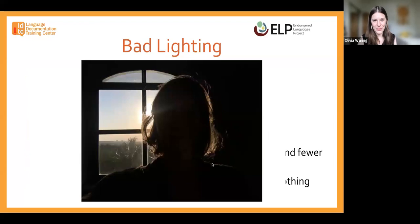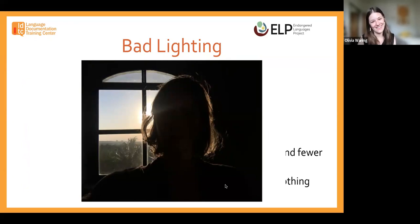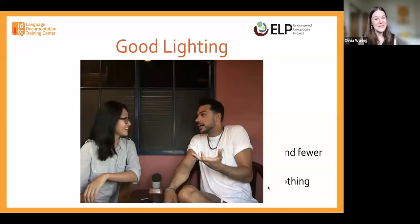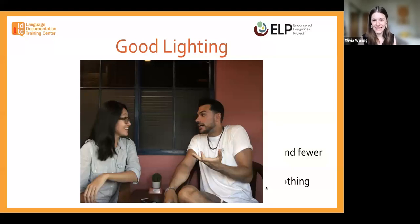Some examples of bad lighting — you have this beautiful video of a speaker doing something wonderful and you're unable to see their facial expressions. You want to avoid that. Here's some good lighting: soft, shadows minimized, faces fully lit.